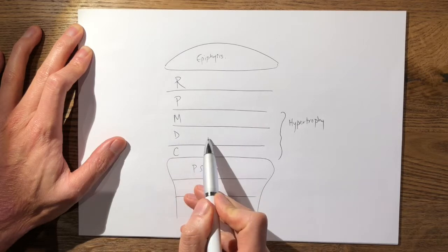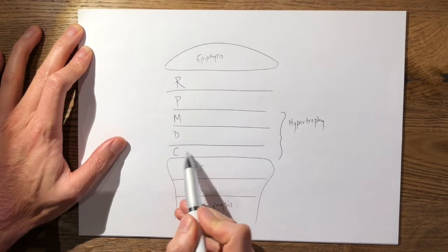So you have the zone of maturation, the zone of degeneration, and the provisional zone of calcification.